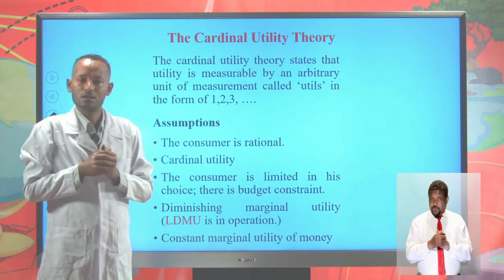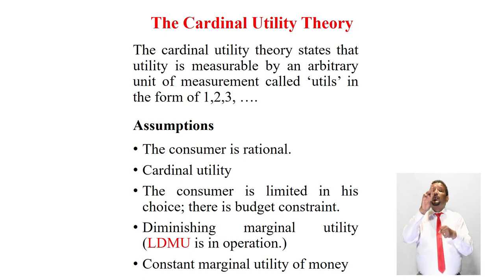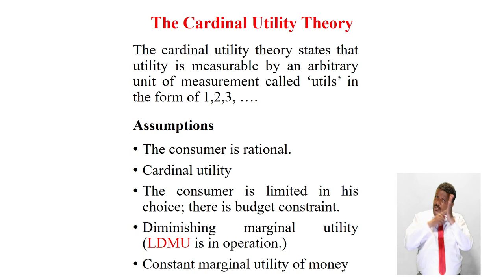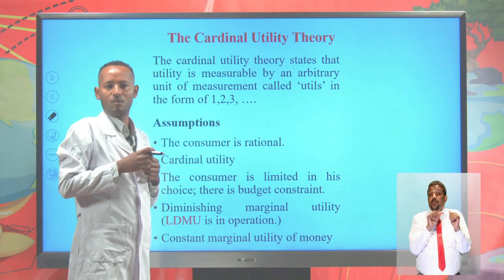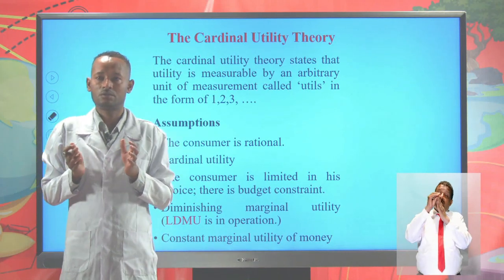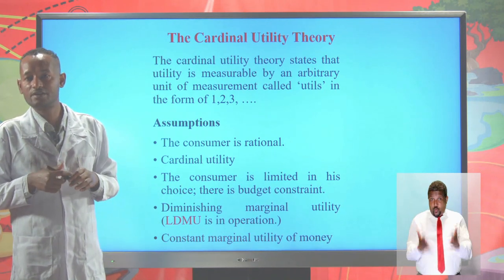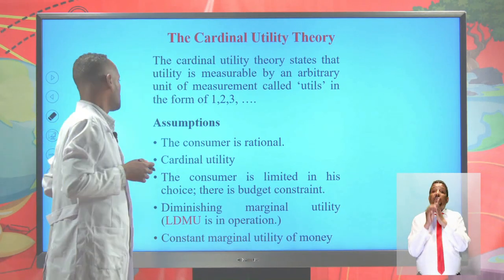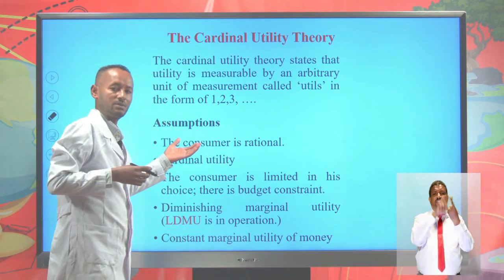Let us see the assumptions of the cardinal utility theory — the preconditions that must be fulfilled in order to apply it. The first assumption is the consumer must be rational. That means the consumer has a clear-cut preference, is subject to budget limitations, and the maximum objective is maximizing total utility. When the consumer is rational, his or her objective is maximizing total utility.